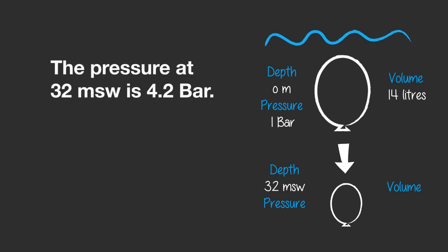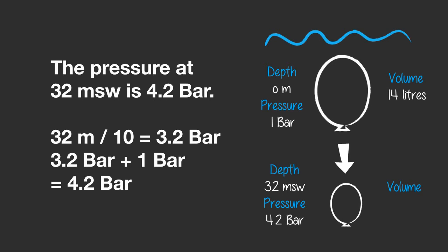Again, we first find out what the pressure is at 32 meters of seawater. It is 4.2 bar. Remember, 32 meters divided by 10 equals 3.2, plus 1 bar of the surface equals 4.2 bar in total.